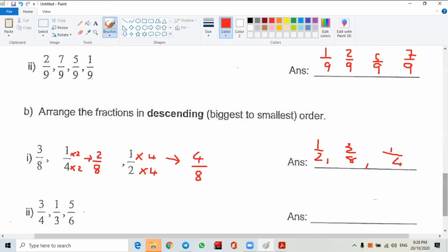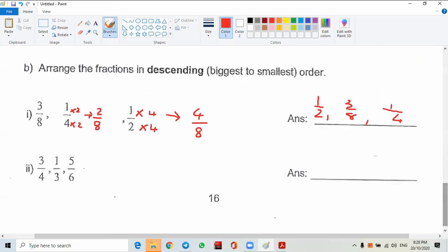Last one. Make the same denominator, make 12. 12 times tables. How to make the 12 in the denominator? This one will be times three. Six times two, five times two, three times four. Make the same denominator.